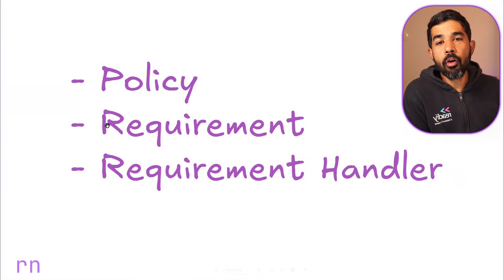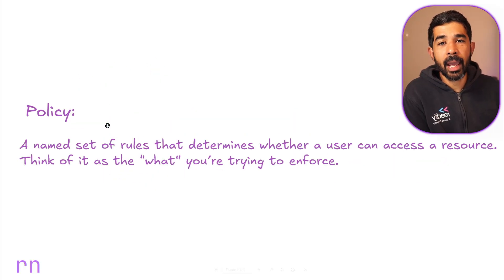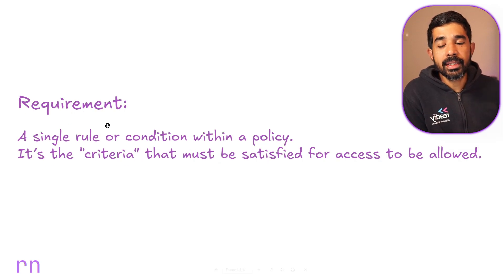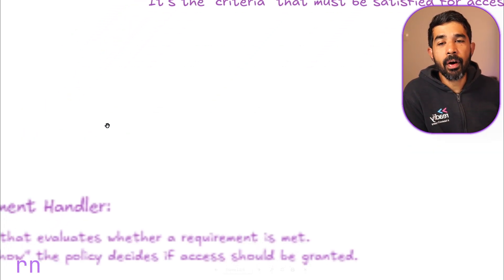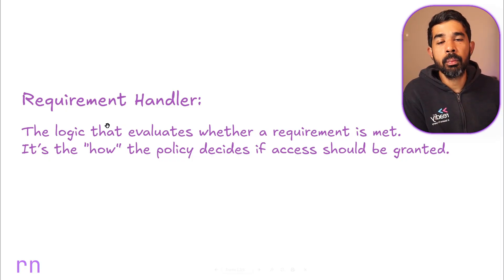The three fundamental building blocks of the Policy-Based Authorization Framework are Policy, Requirement, and Requirement Handler. A policy is a named set of rules that determines whether a user can access a resource or not — this fits into the 'what you're trying to enforce.' A requirement is a single rule or condition within a policy — it is the criteria that must be satisfied for access to be allowed. The Requirement Handler is the logic that evaluates whether a requirement is met, basically the 'how' the policy decides if access should be granted.